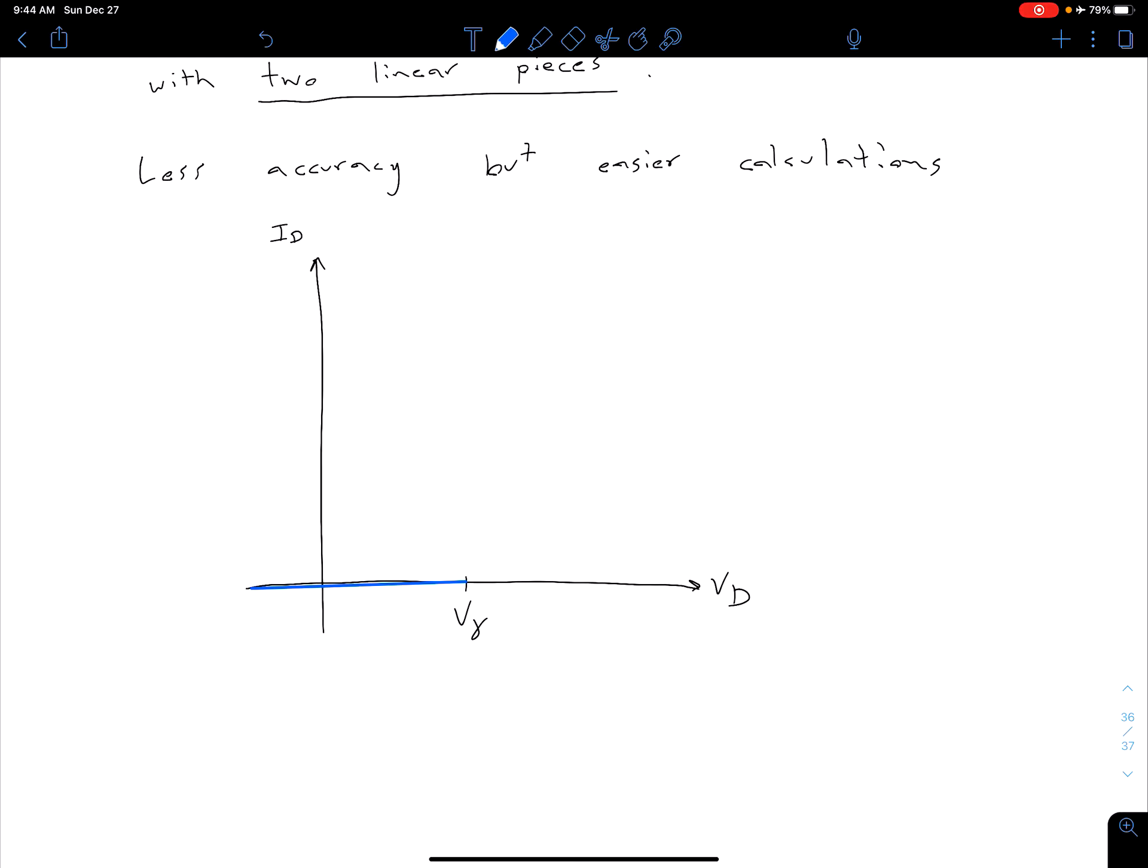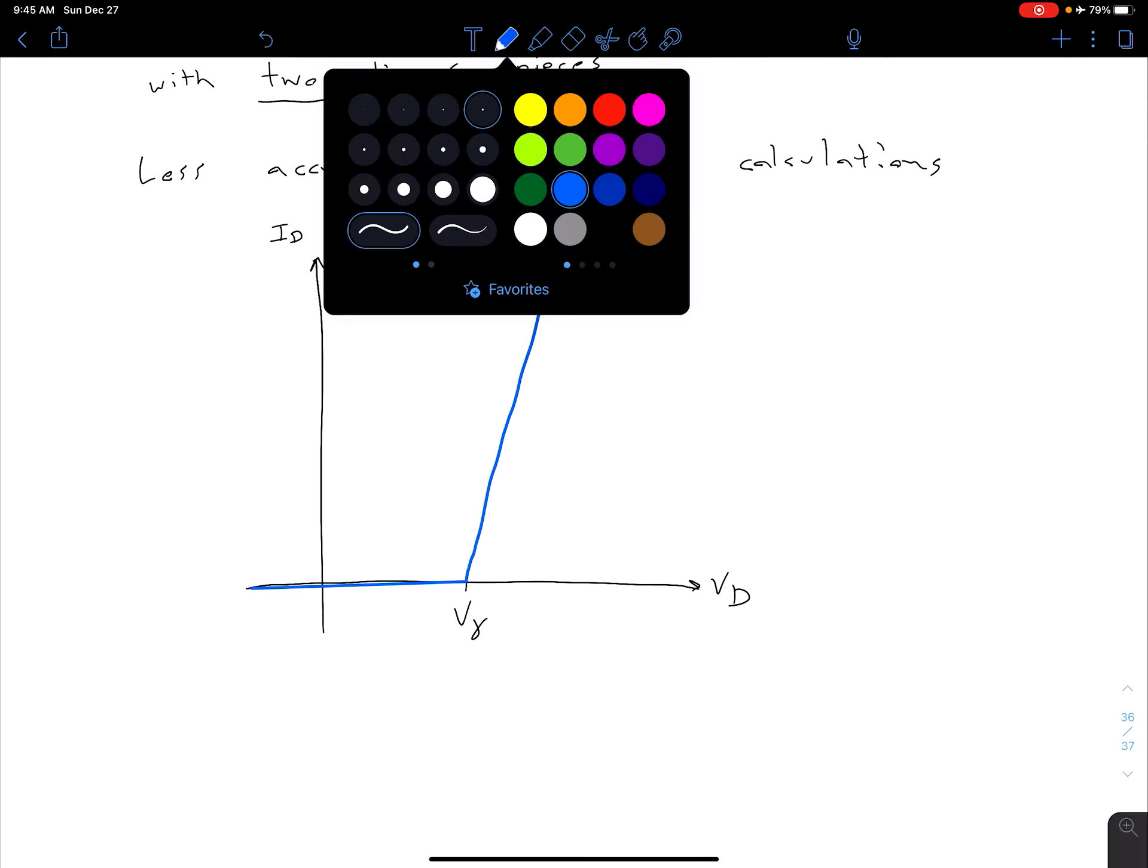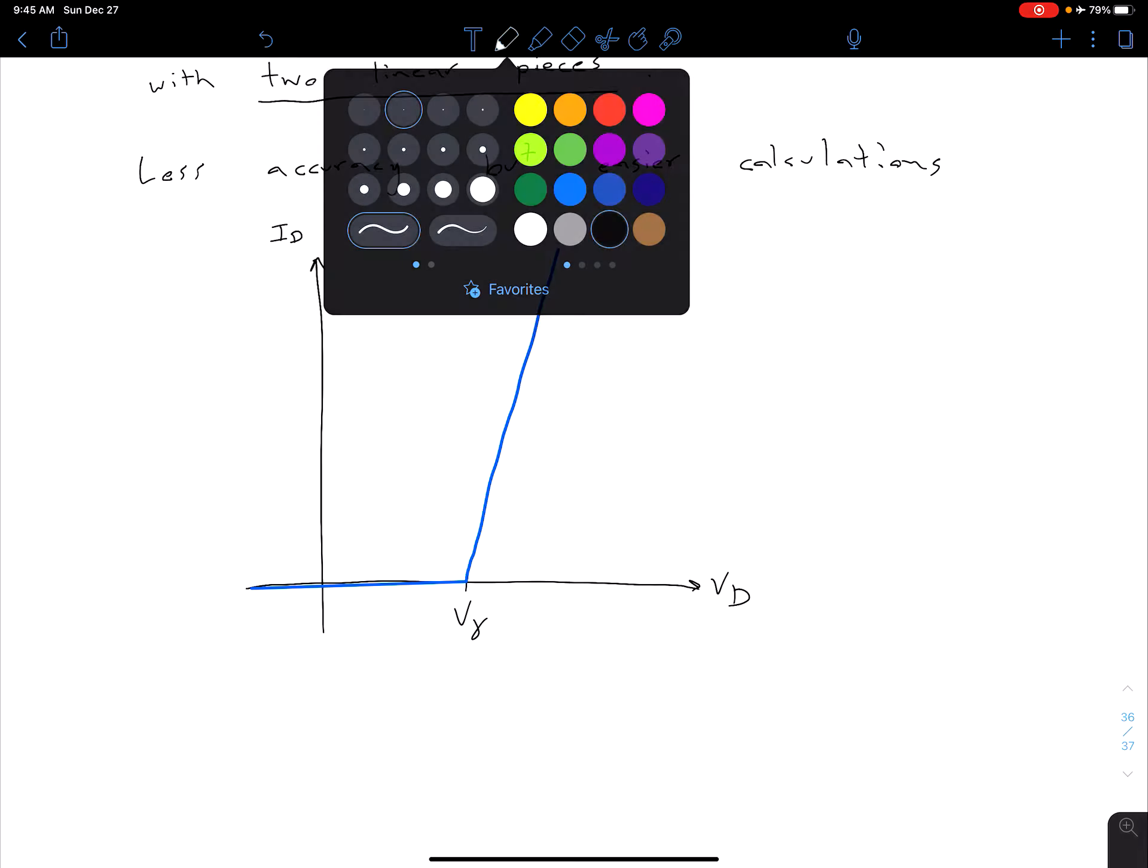Now, once our VD gets greater than V gamma, we're going to say that we have some linear line that has some slope like this. And so the slope of this line where we have non-zero current, we can define in terms of a resistance. So we can say this slope here is going to be equal to 1 over R sub F.